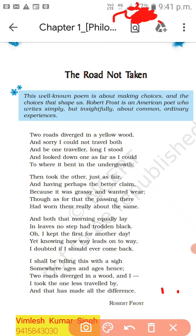The speaker chooses one road, telling himself that he will take the other another day. Yet he knows it is unlikely that he will have the opportunity to do so. He admits that someday in the future he will recreate the scene with a slight twist — he will claim that he took the less traveled road. The poem consists of four stanzas of five lines, and the rhyme scheme is ABAAB.